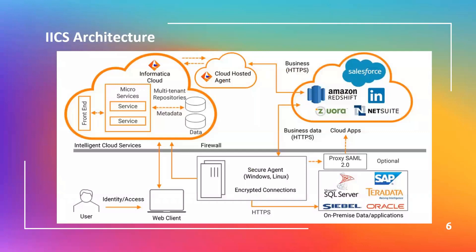Now let us understand IACS architecture. IACS is an iPaaS-based application — that is, integration platform as a service — where users can access it from any machine with internet access and a web browser. When you access IACS, the web browser connects and establishes a secure HTTP connection with the Informatica cloud services, which includes the IACS repository. This is a multi-tenant repository that stores various information about tasks, like source and target metadata.